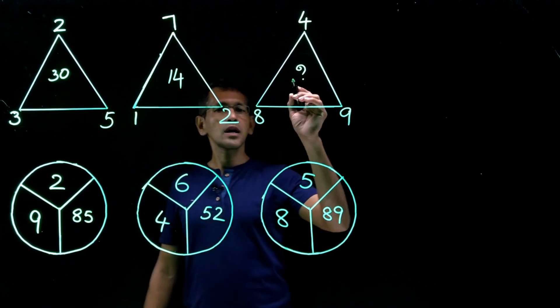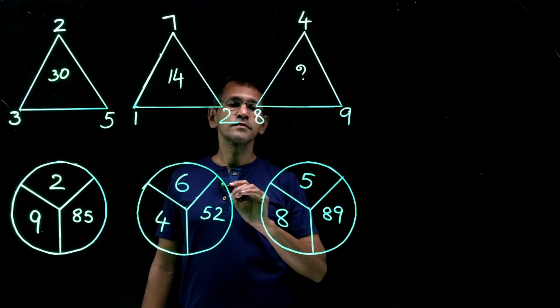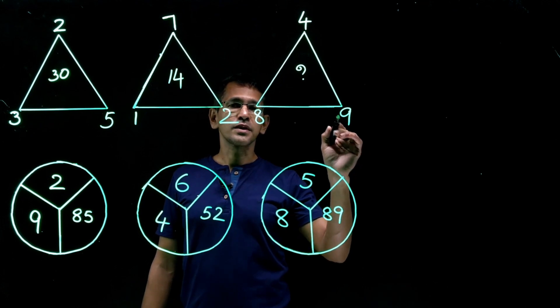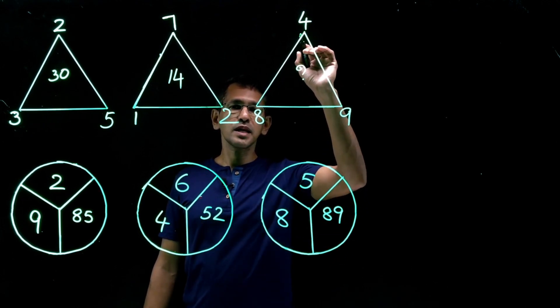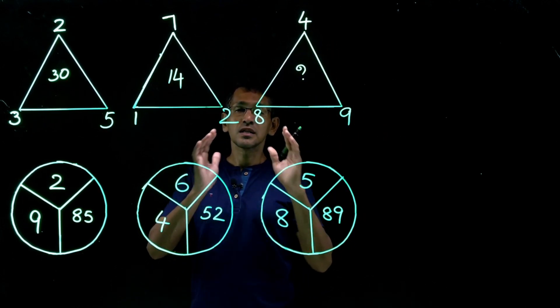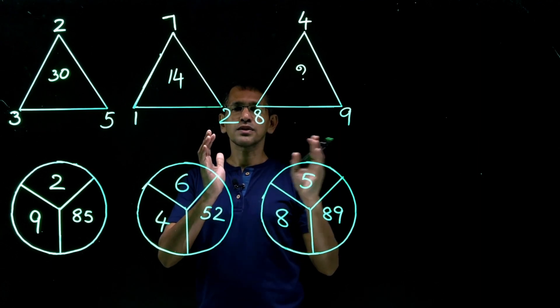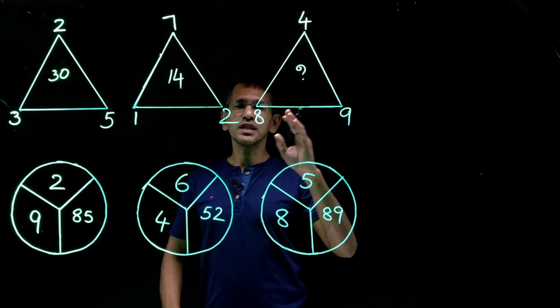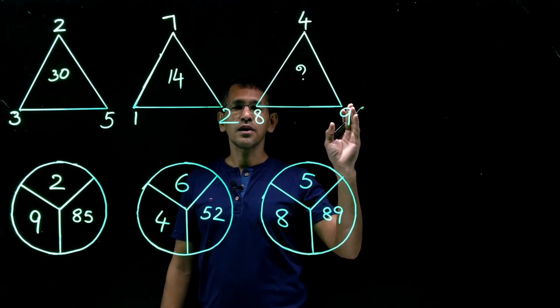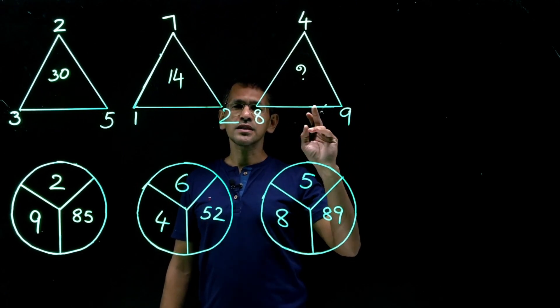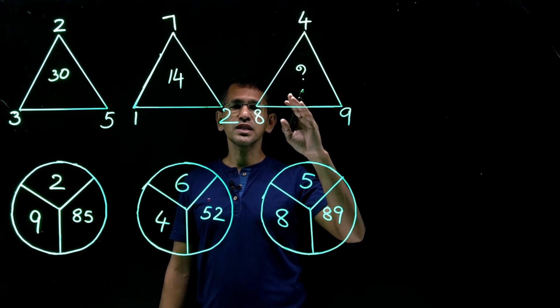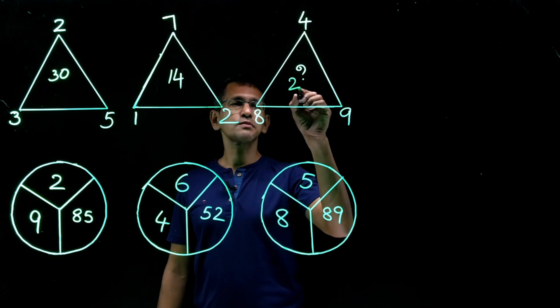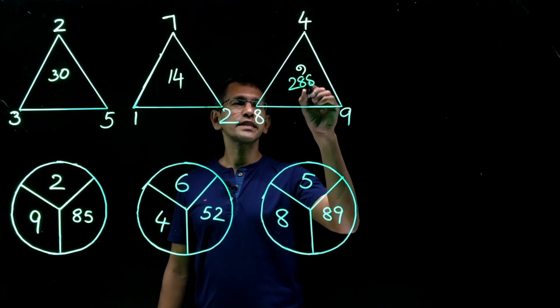Now, that's going to be the same pattern right here. 8 into 9, 72. 72 into 4 must be the answer. What is 72 into 4? 70 into 4, 280. So what we need is 72 into 4 is 8. So the answer must be 288.